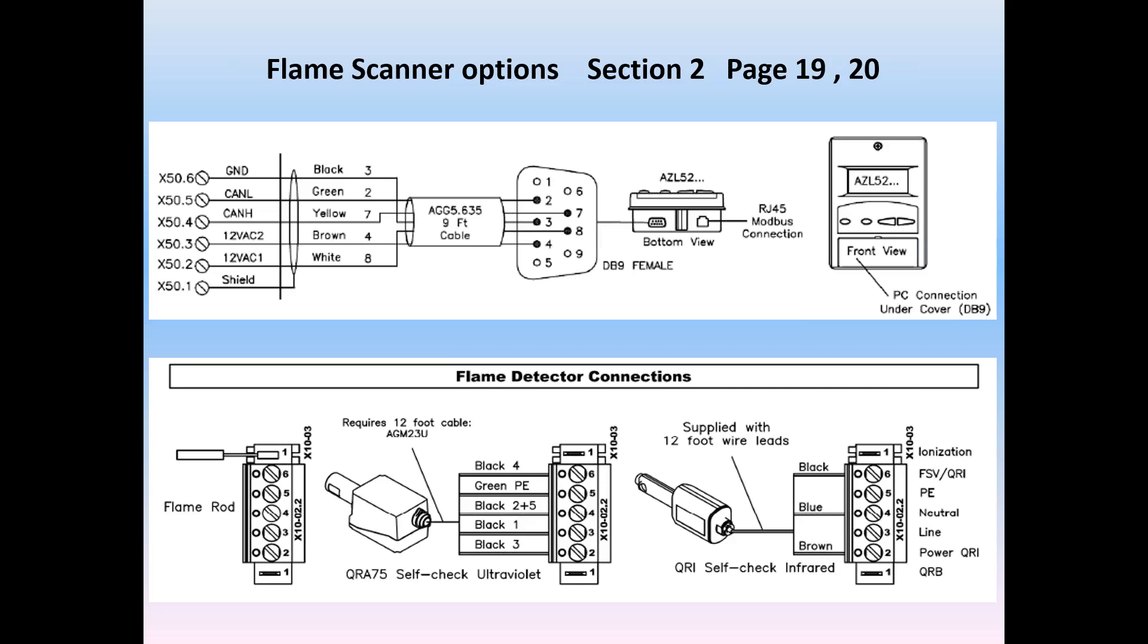Second detail on this slide is for flame detection, which could be one of any of three devices: a simple flame rod, a UV self-check scanner, or an infrared also self-check scanner. The scanner terminals have many options throughout the world. In Canada, US, Mexico, Central and South America, options are shown here. Note that the plug X10-02.2 pins start with pin number 2 instead of 1. This is most widely used on the infrared QRI scanner, which is shown.